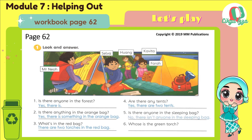Number five: Is there anyone in the sleeping bag? No, there isn't anyone in the sleeping bag. Number six: Whose is the green torch? The green torch is Huang's.